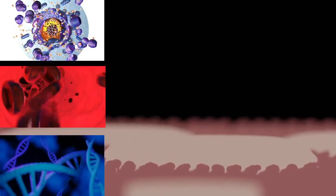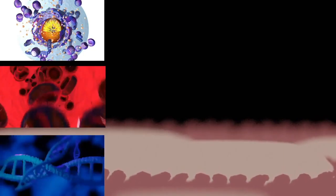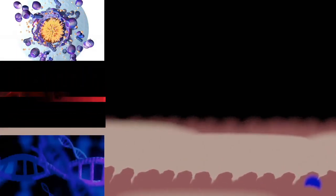Cell wall, except genera Mycoplasma and Thermoplasma. Description: The outer covering of most cells protects the bacterial cell and gives it shape.